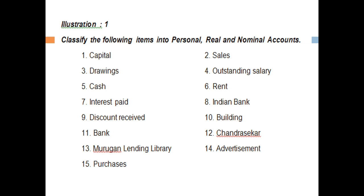Outstanding salary is a personal account because it represents a person — Jacob, Raj, or similar individuals. Cash is a real account. Interest paid is a nominal account — it is not a personal account and not a real account. Indian Bank is a personal account because it is an artificial person.